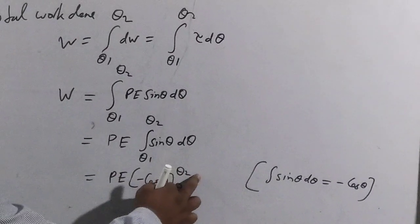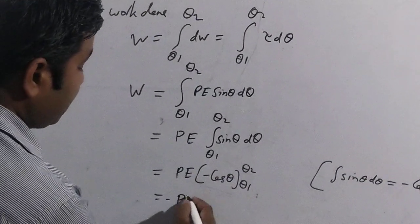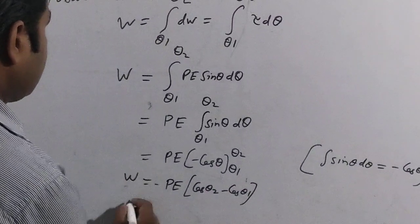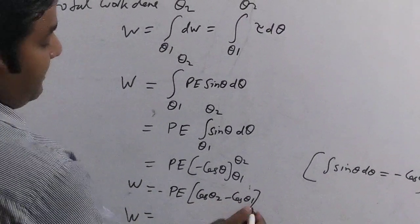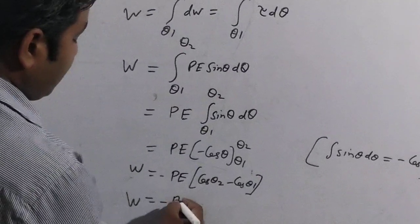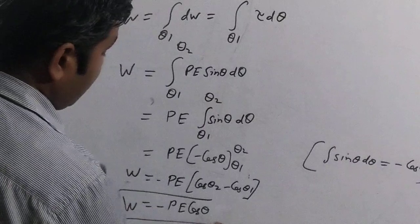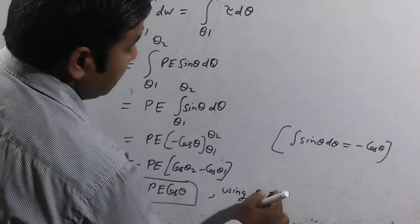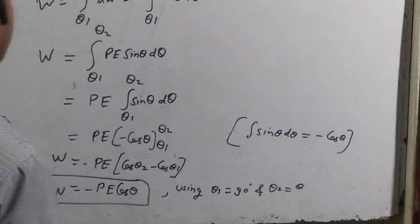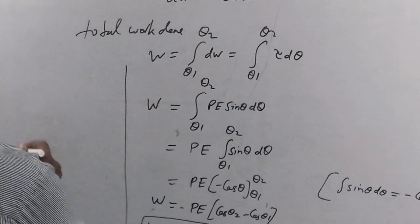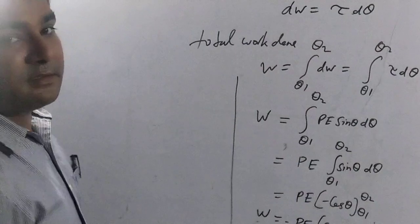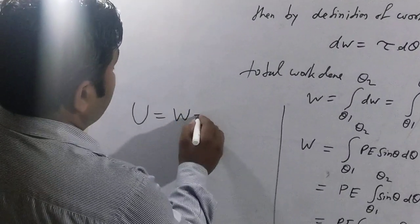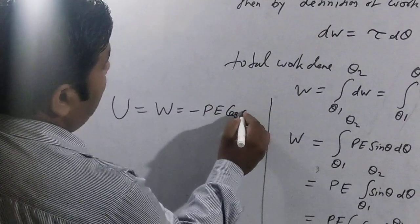Putting in the limits, W = −pE [cosθ₂ − cosθ₁] = −pE cosθ₂ + pE cosθ₁. When we put θ₁ = 90° and θ₂ = θ, this gives W = −pE cosθ, since cos90° = 0. This work done is stored in the form of potential energy, so U = W = −pE cosθ.